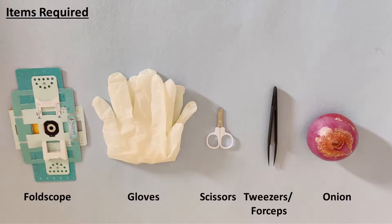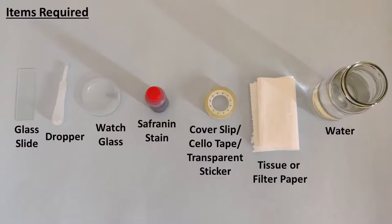For this we will need a foldscope, gloves, scissors, tweezers or forceps, onion, a glass slide, dropper, two watch glasses, saffronin stain, cover slip or cello tape or transparent sticker, tissue or filter paper for blotting excess liquid, and water.